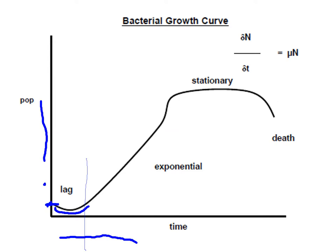After the lag phase, there is an exponential increase in the population up to a certain level. This is the exponential phase, where each unit of time the generation doubles. After a while, with the same media, the bacterial population becomes steady — this is the stationary phase, where the number of newly generated cells equals the number of dying cells.